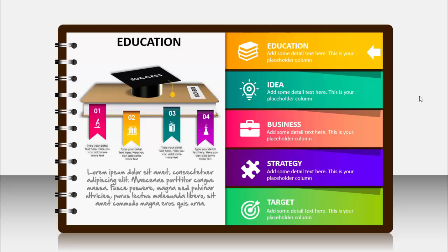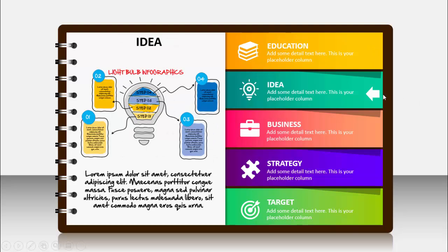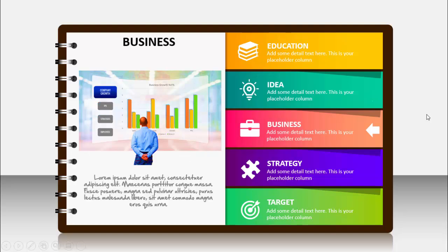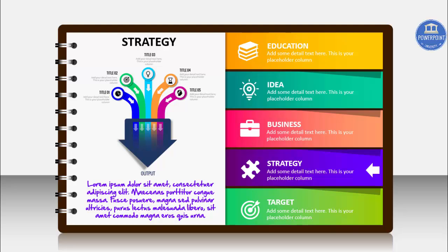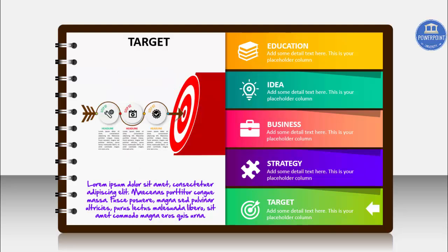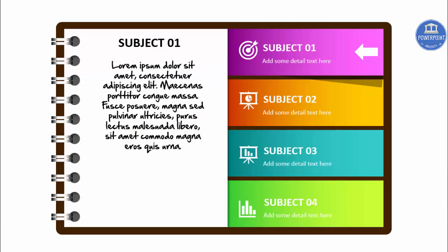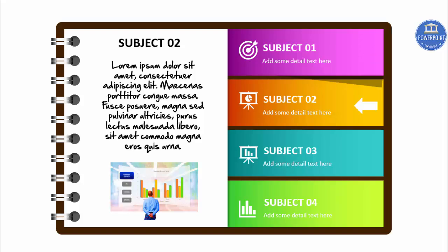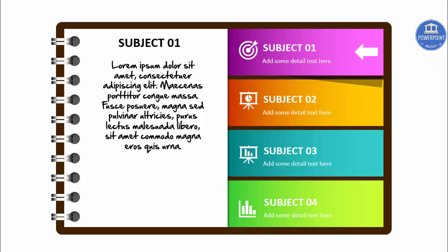If I click, it goes to the next slide — this is the idea page with my own images and designs. Then there's the business page, strategy page, and target page. If you want, you can add more options; the only trade-off is that the width of each tab will be reduced. You can make it five, six, or seven tabs.